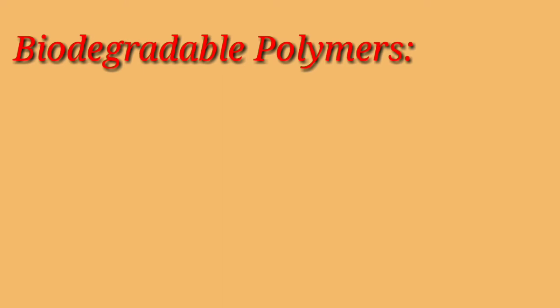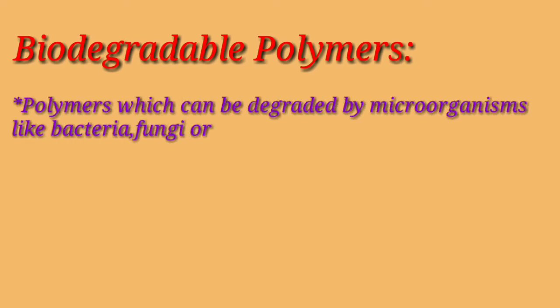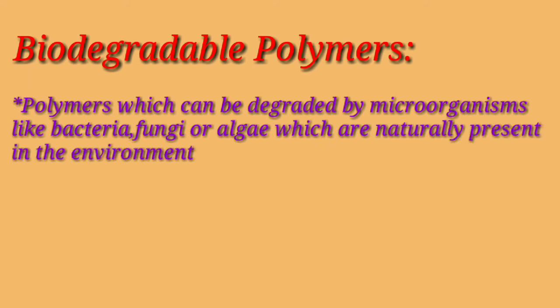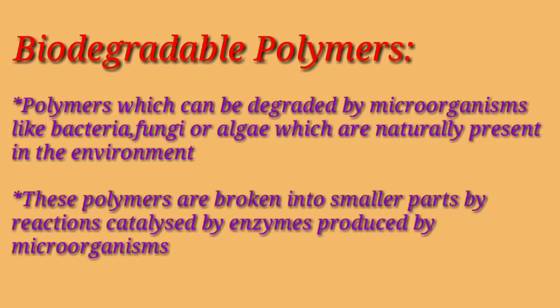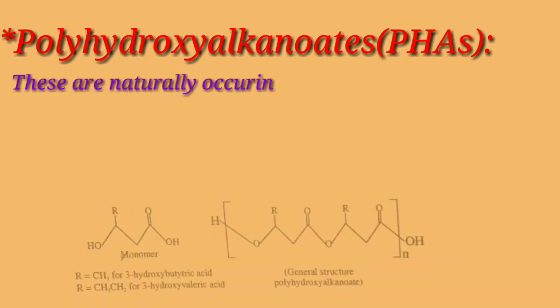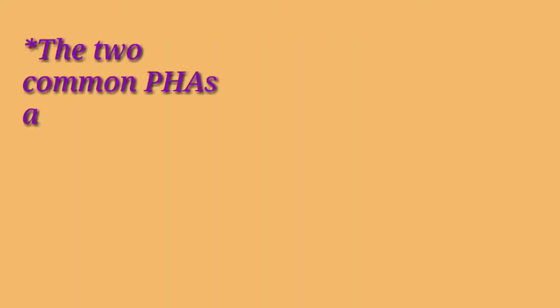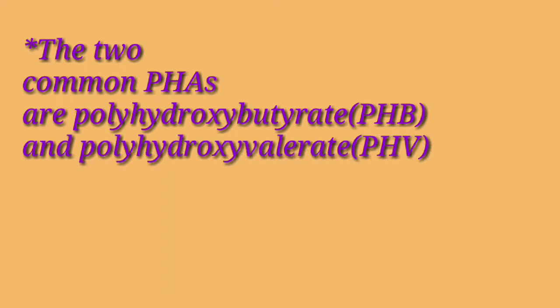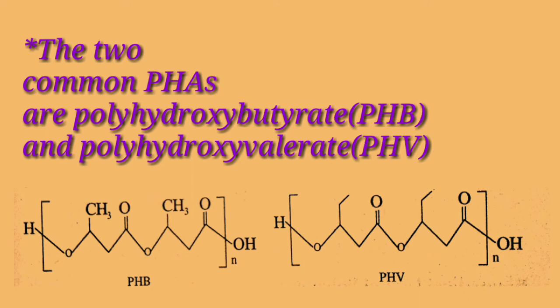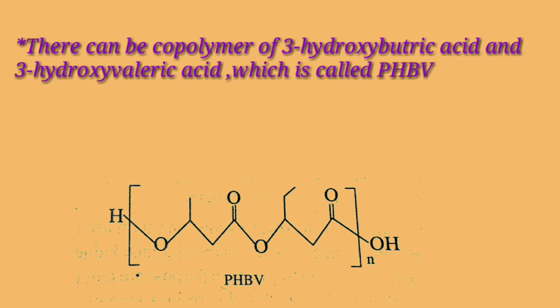Next is biodegradable polymers. These are polymers which can be degraded by microorganisms like bacteria, fungi, or algae naturally present in the environment. These polymers are broken into smaller parts by reactions catalyzed by enzymes produced by microorganisms. Polyhydroxyalkanoates are naturally occurring polymers produced by certain bacteria. They are polymers of hydroxycarboxylic acids such as 3-hydroxybutyric acid or 3-hydroxyvaleric acid. The two common PHAs are PHB and PHV, i.e., polyhydroxybutyrate and polyhydroxyvalerate. There can also be a copolymer of 3-hydroxybutyric acid and 3-hydroxyvaleric acid, known as PHBV.